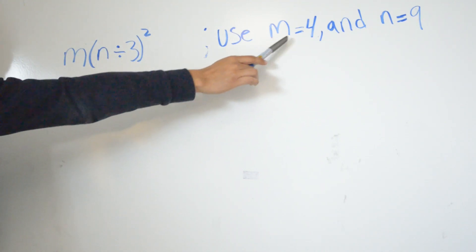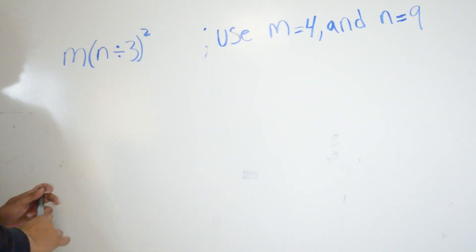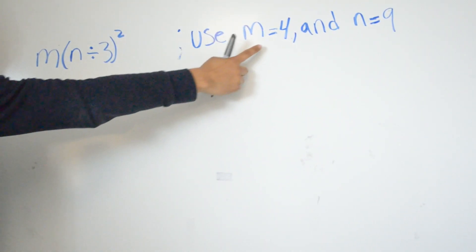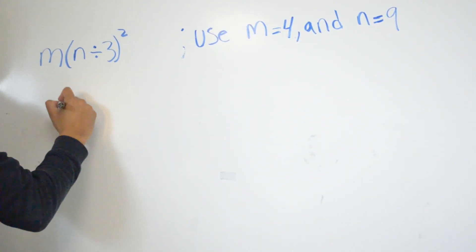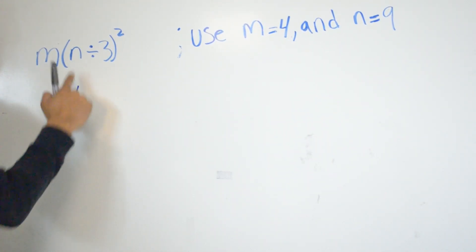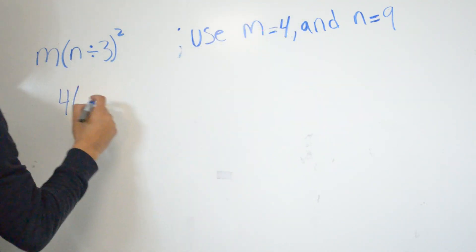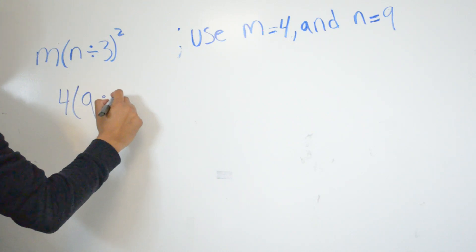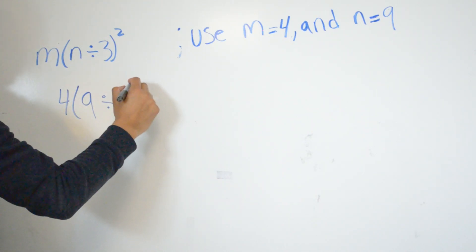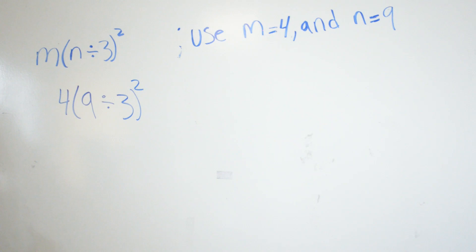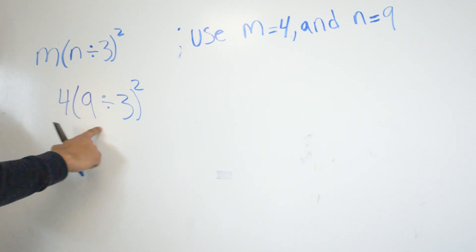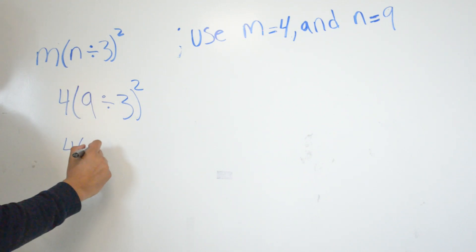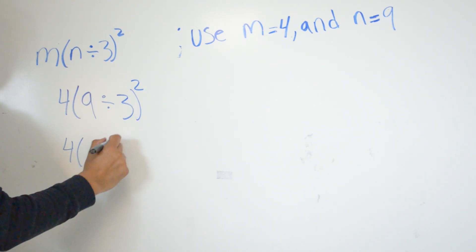In this problem, where we see m we're going to put in 4, and where we see n we're going to put 9. So for n we use 4, and it's going to be 9 inside parentheses divided by 3, to the second power. We do whatever is inside the parentheses first, so 9 divided by 3 is going to give us 3, then 3 to the second power.